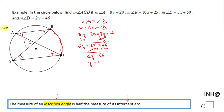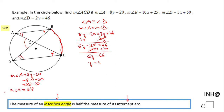Now that y equals 11, we can find angle A or angle D. Finding angle A: the measure of angle A is 8y minus 20. Plugging in 11 for y gives 8 times 11 minus 20, which is 88 minus 20, equal to 68 degrees.